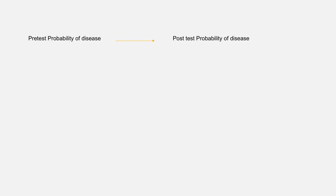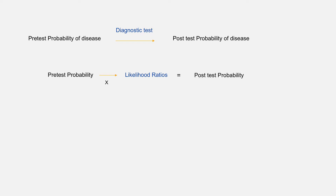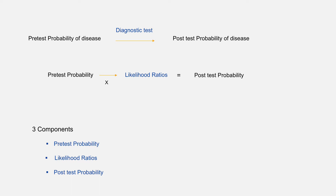Similarly, if we know the pre-test probability of a disease, with the help of information from a diagnostic test we can calculate post-test probability of disease. First we estimate pre-test probability, then we calculate likelihood ratios with the help of sensitivity and specificity of the test, and then we can calculate post-test probability. So we have three components of this formula: pre-test probability, likelihood ratios, and post-test probability. We will discuss all these components in detail.